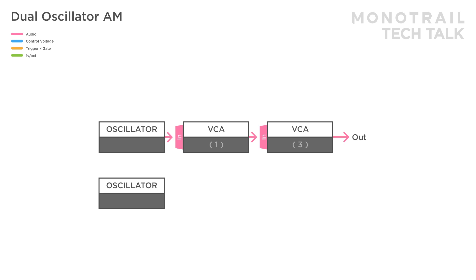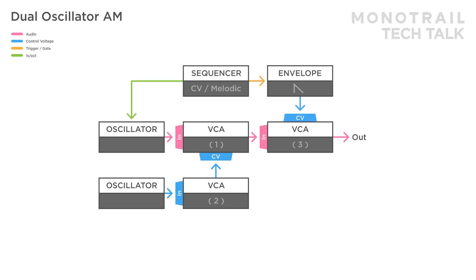Here's the dual oscillator setup, but again with a VCA after the modulation oscillator. A sequencer and envelope are used to turn this into a voice, and a copy of the envelope is used to modulate VCA2 as well.